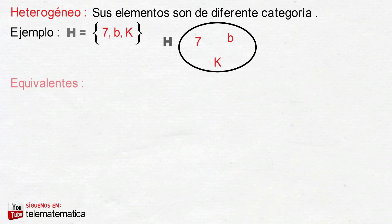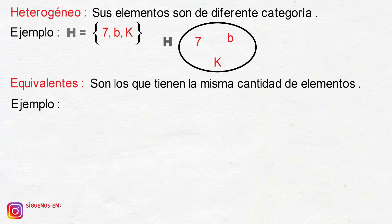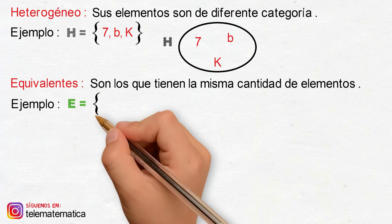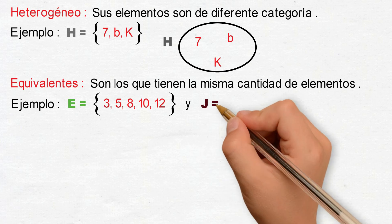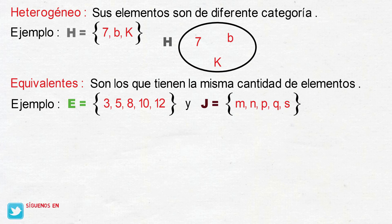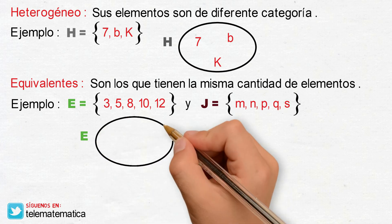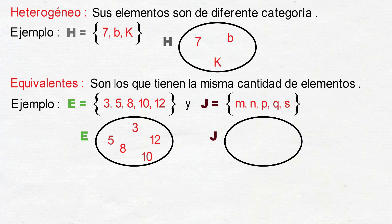Siguiente clasificación, conjuntos equivalentes, que se definen como: son los que tienen la misma cantidad de elementos. Por ejemplo, el conjunto E, definido por cinco números, y el conjunto J, definido por otros cinco elementos. El conjunto E contiene los elementos tres, cinco, ocho, diez y doce. Y el conjunto J contiene los elementos M, N, P, Q y S.